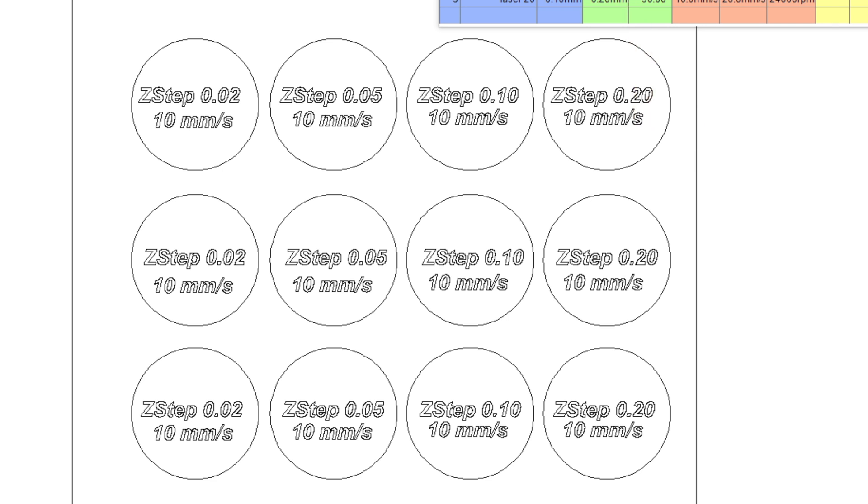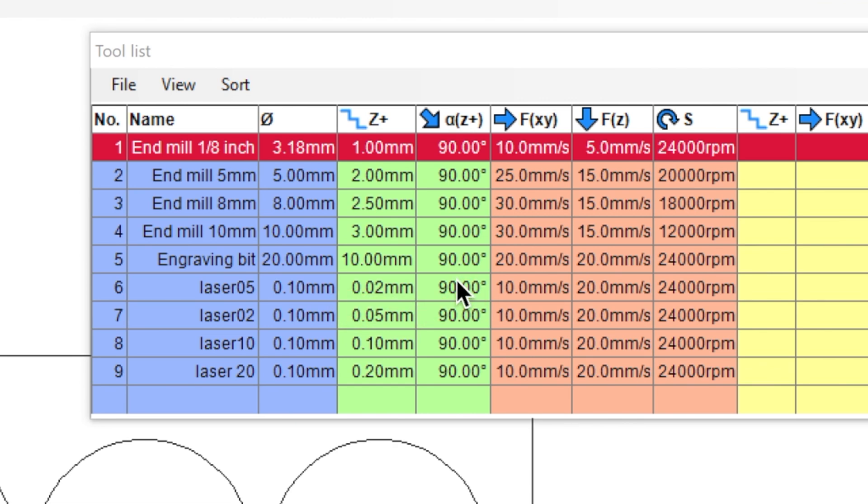We're going to apply different laser step depths to them. All the speeds are going to be the same at 10 millimeters per second. We'll try a 0.02 millimeter step - that's the smallest I could get ESTL CAM to go - and we'll step up from there.